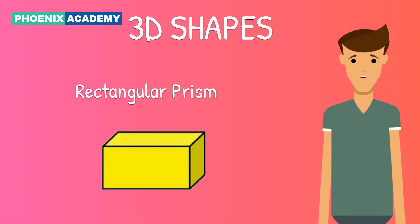This is a rectangular prism. It's almost like a cube, but its length, breadth, and height may be different. For a rectangular prism, opposite sides are always of the same size. This is a rectangular prism.